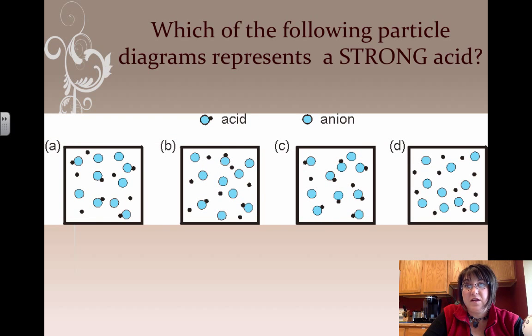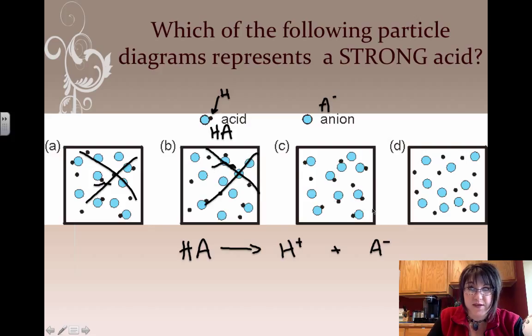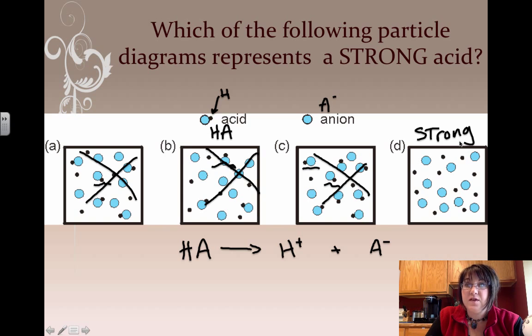Here's a question for you. I've got four particle diagrams. Which of these particle diagrams represents a strong acid? If this is our acid where the little black dot is the hydrogen ion, then the anion would be A minus, and this is our acid HA. When it's a strong acid, it breaks apart completely, so that there's no more HA left. We get hydrogen ions completely separated from the anion. This picture shows some of these still together, so it can't be this one. Here are some that are still attached, so it can't be B. C still has some of these particles stuck together. That's not a strong acid. But in D, it's easy to see that all of those molecules have completely broken apart. That one is indeed the strong acid.